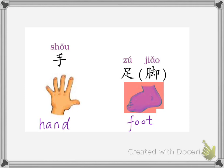This is hand (手). Its pronunciation is like this. Its writing is like this: this is the first stroke, this is the second stroke, this is the third stroke, and this is the fourth stroke.